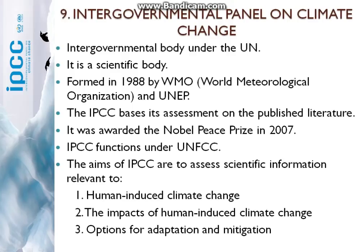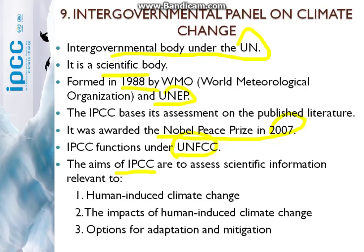The ninth one is IPCC — the Intergovernmental Panel on Climate Change. It's an intergovernmental body under the United Nations and a scientific body that produces reports based on scientific developments across the world. It was formed in 1988 by the World Meteorological Organization and the United Nations Environment Programme. It bases its assessments on published literature, was awarded the Nobel Peace Prize in 2007, and functions under the United Nations Framework on Climate Change. The aims of IPCC are to assess scientific information relevant to human-induced climate change, its impacts, and options for adaptation and mitigation.